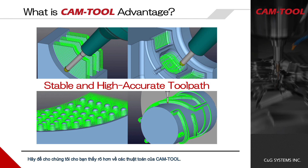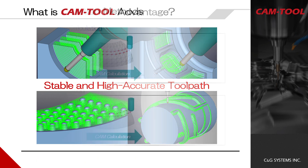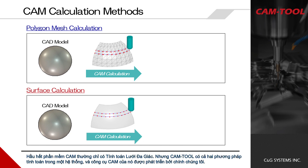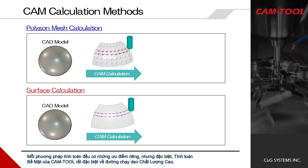There are two types of CAM calculation methods in the world. One is polygon mesh calculation and the other is surface calculation. Almost all other CAM software have only polygon mesh calculation, but CamTool has both calculation methods in one system, and its CAM engine has been developed by themselves. Each calculation method has its own advantages, but especially CamTool's surface calculation is very special in terms of high-quality toolpaths.